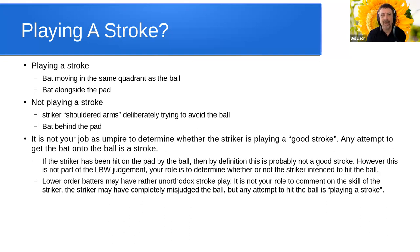Let's have a look at a lower-order batter coming in at 9 or 10 — they're a specialist bowler. They might have rather unorthodox stroke play, swishing the bat left, right and centre. They may not get anywhere near the ball. It's not your role as the umpire to comment on the skill of the striker. The striker may have completely misjudged the ball, and a lower-order batter may do that quite often. But any attempt to hit the ball is playing a stroke.